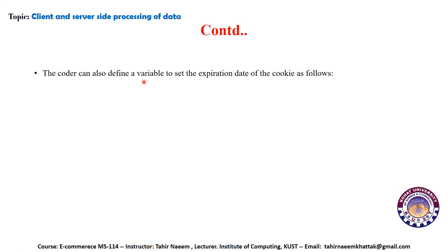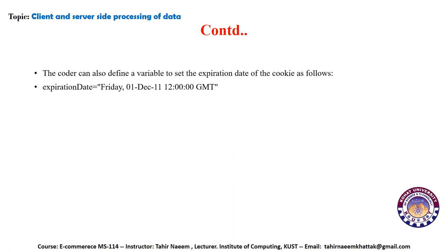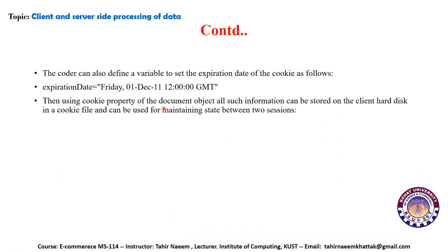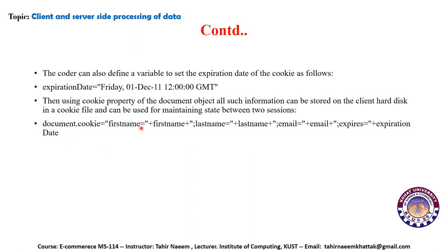The coder can also define an expiration date for a cookie. Cookies don't always remain on the client computer — an expiration date can be set. For example, an expiration date of Friday, 1st December 2011, 12:00 GMT can be set, upon which the cookie will expire automatically. Using the cookie property of the document object, all information including first name, last name, email, and expiration date can be stored on the client hard disk in the cookie file.